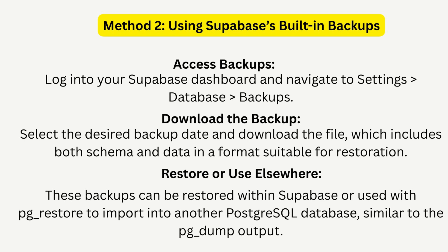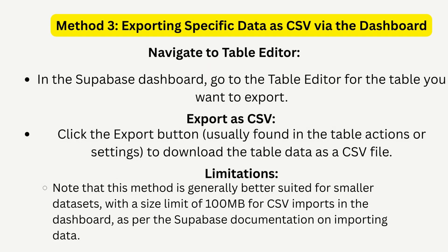For smaller databases, export specific tables as CSV files right from your dashboard. Go to the table editor, select your table, and click export to download it as CSV. This is perfect for reports or quick data transfer, but it's best for smaller databases due to size limits.